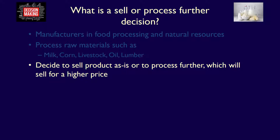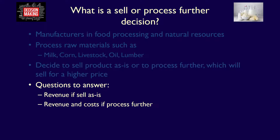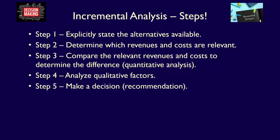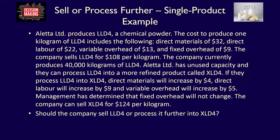Management has to determine at what point in the production process they want to sell their product — should they sell as is or process further? They do this by exploring the revenues they can obtain if they sell as is, and the revenues and costs they will incur if they process further. We'll demonstrate this concept using a single product example with incremental analysis, applying all steps from explicitly stating the alternatives right down to making a recommendation in step five.